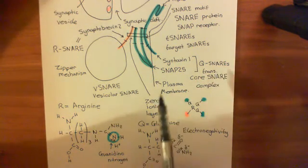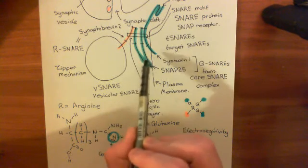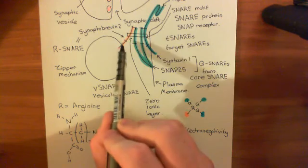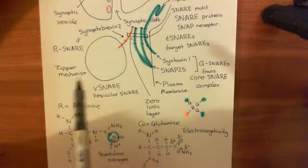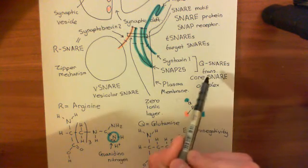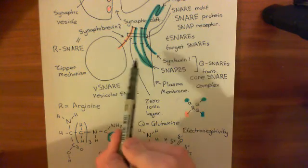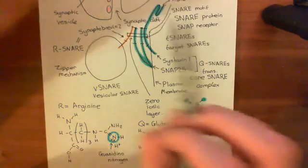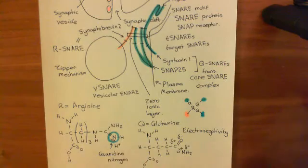The reason it's called a trans-core SNARE complex is that the different SNAREs are not in the same membrane. Syntaxin 1 and SNAP25 are in the same membrane, but Synaptobrevin 2 is in an opposing membrane — the synaptic vesicle membrane. Trans means on the other side, so the SNARE proteins are on opposite sides, in different membranes.